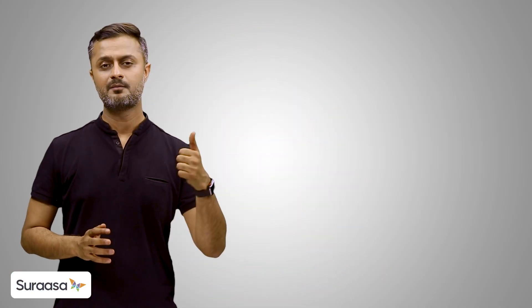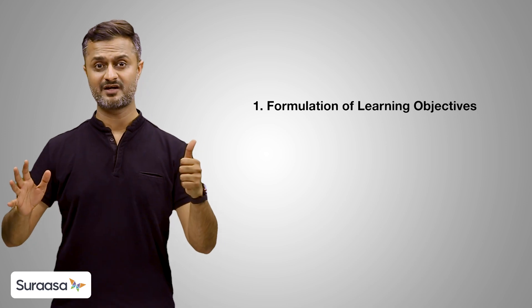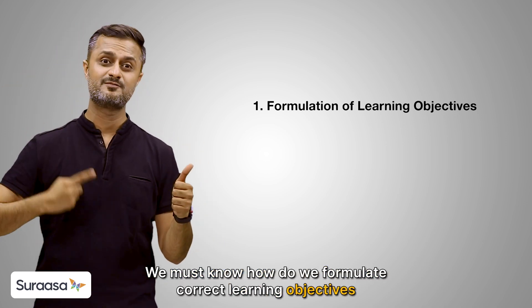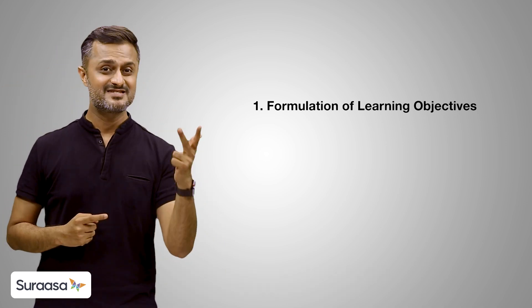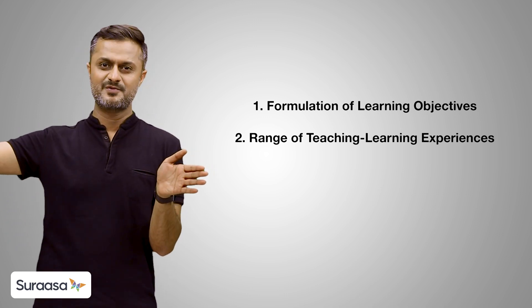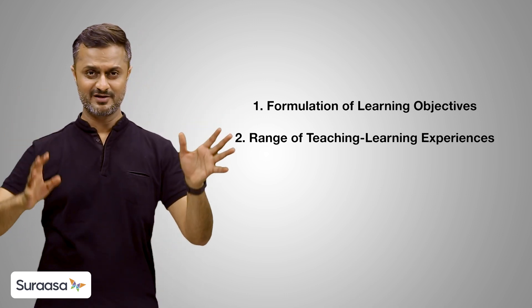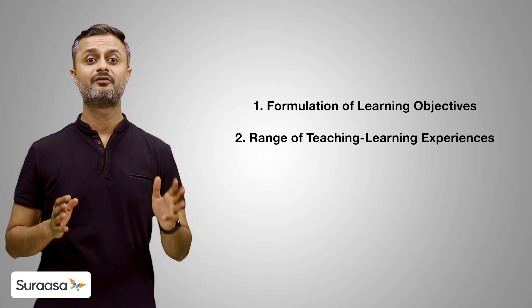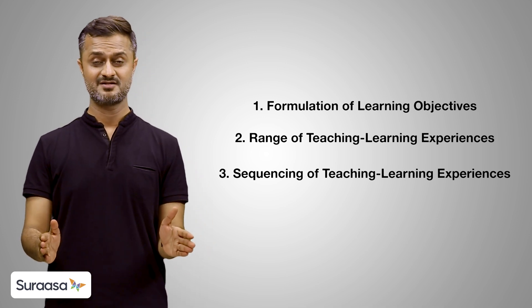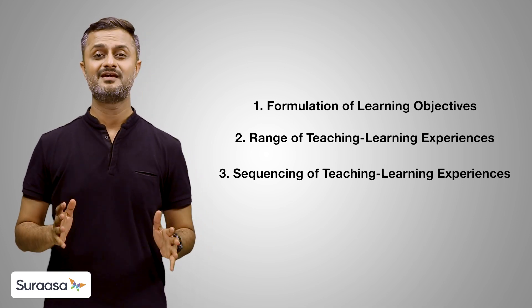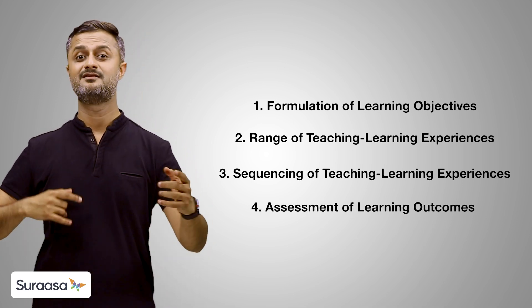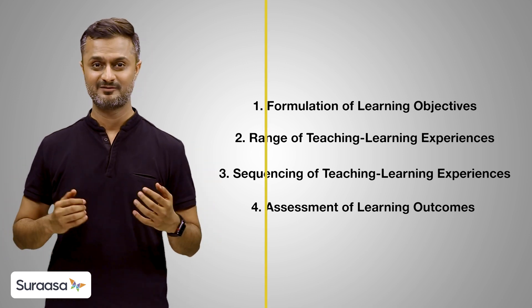The four steps are: number one, formulation of learning objectives — we must know how to formulate correct learning objectives. Second, creating a range of teaching learning experiences, different kinds of experiences. Third, sequencing of teaching learning experiences, and finally assessing the learning outcomes that these teaching and learning experiences created.